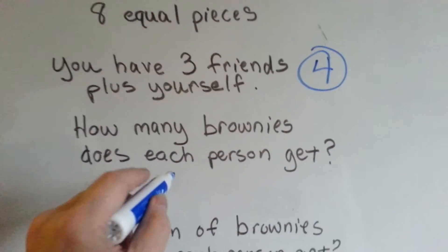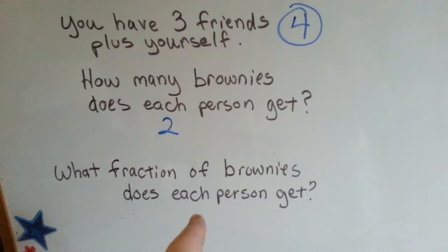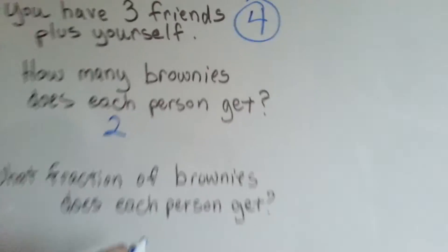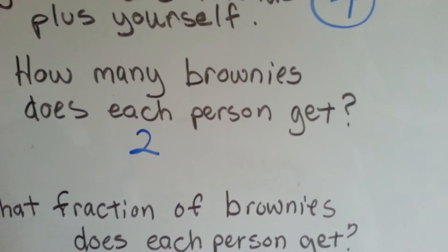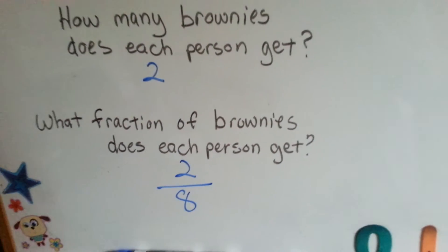So how many brownies does each person get? They each got two. What fraction of brownies did each person get out of the total of eight? You each got two of the eight.